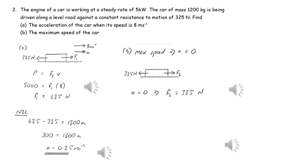At maximum speed, there will be no acceleration, and this means we can work out the driving force or the tractive force of the vehicle. Then to find the maximum speed, we just use the fact that power is equal to tractive force times velocity.